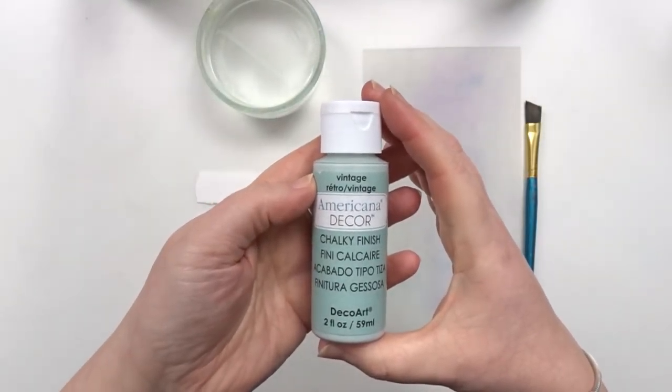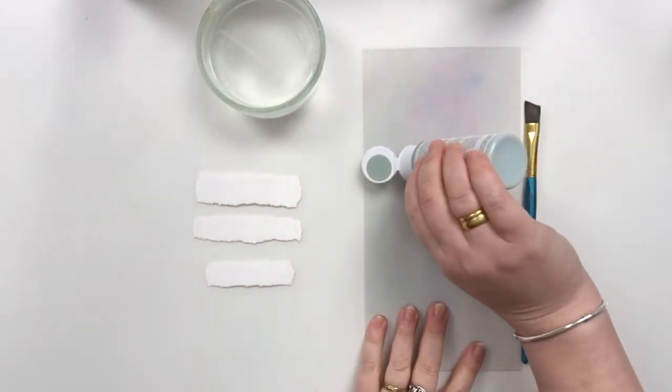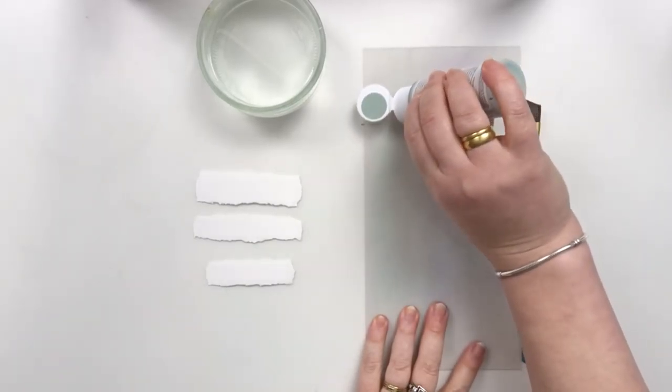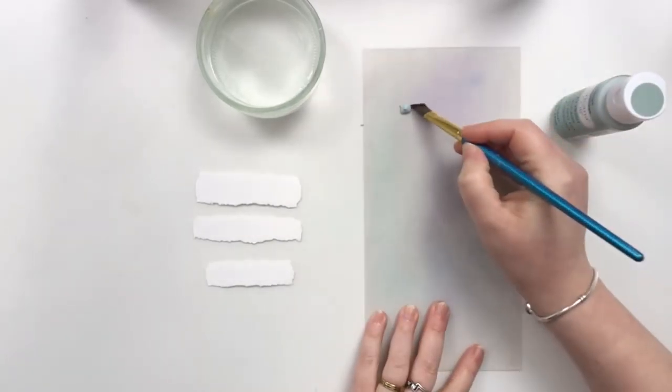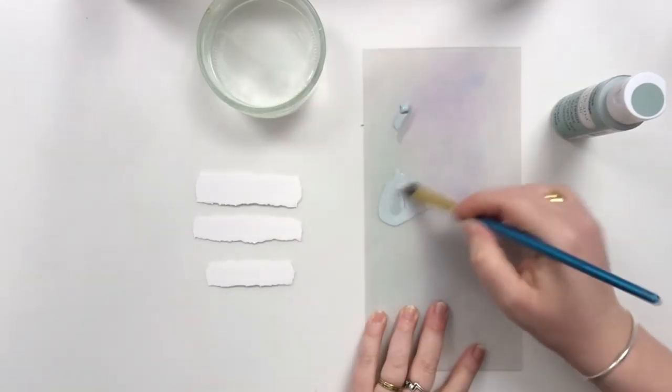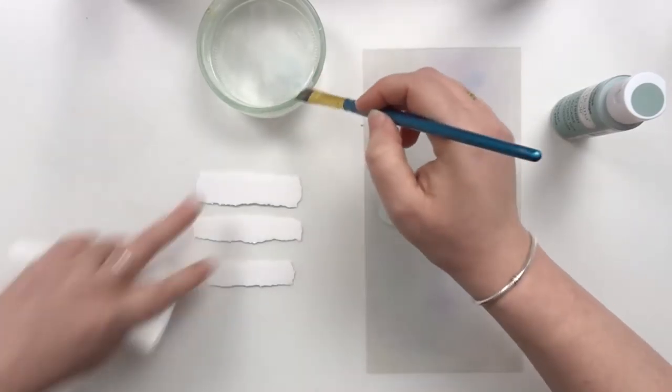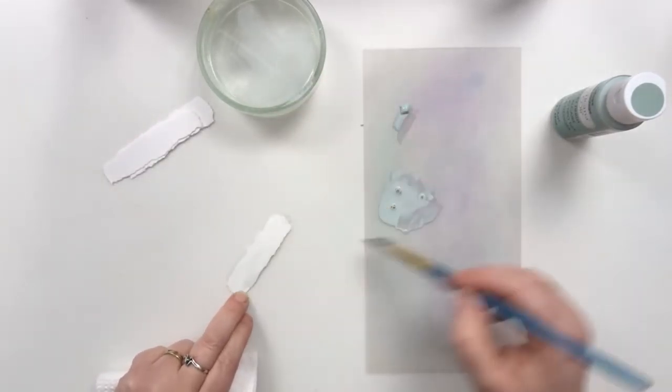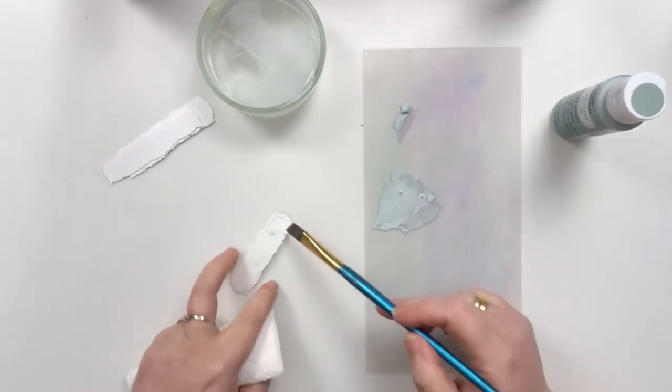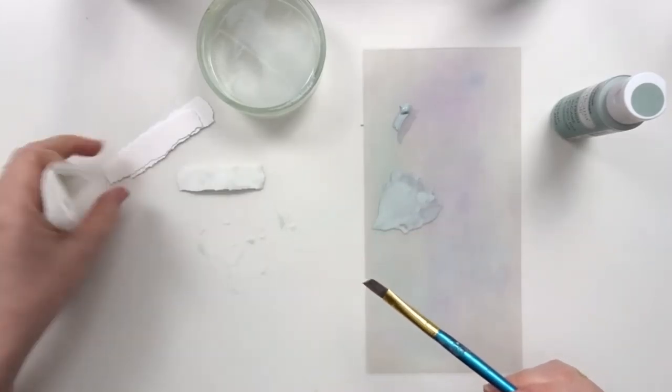The second step is coloring these three torn strips. I'm using the color Vintage and I want some texture in my background. So after laying down my first layer and drying it, I'm going back in by dipping it directly into my paint and I'm also splattering some paint on top of it.